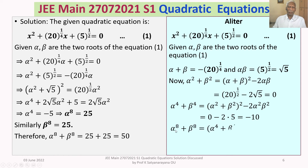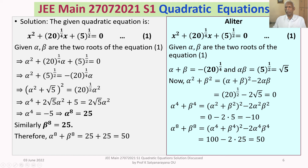From here, alpha to the power 8 plus beta to the power 8 equals alpha power 4 plus beta power 4 whole squared minus 2 times alpha power 4 times beta power 4. Substituting: alpha power 4 plus beta power 4 is minus 10, so minus 10 whole squared is 100. And alpha power 4 times beta power 4 is 5 squared, that is 25. So 100 minus 2 times 25 gives 100 minus 50, which equals 50.